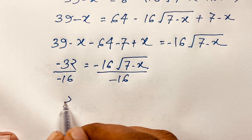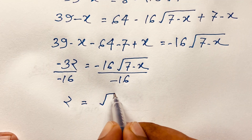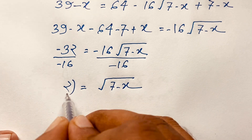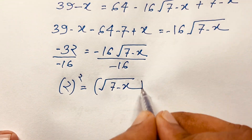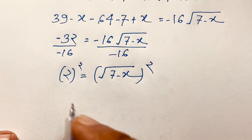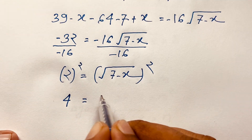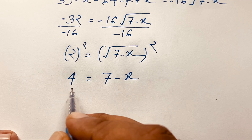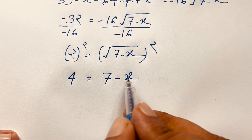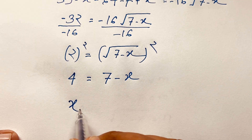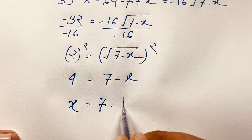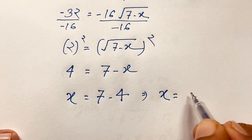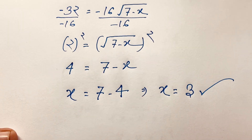Squaring both sides again: 4 equals 7 minus x. Moving x to one side gives x equals 7 minus 4, so x equals 3. This is our final answer from Method 2 as well.